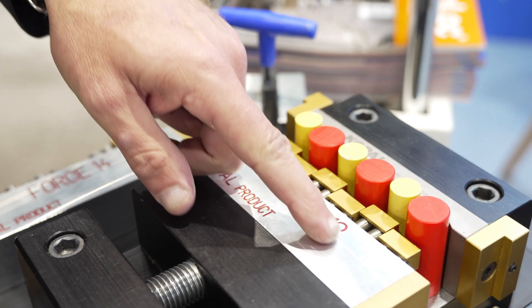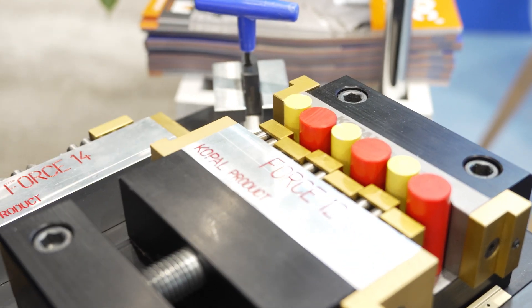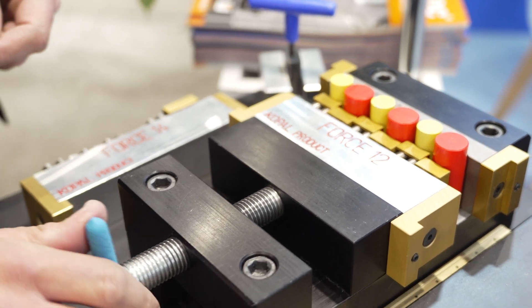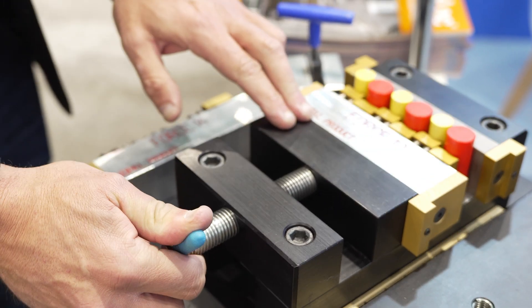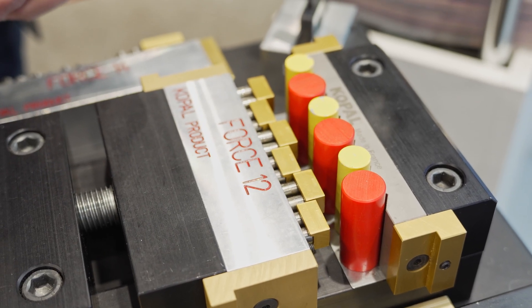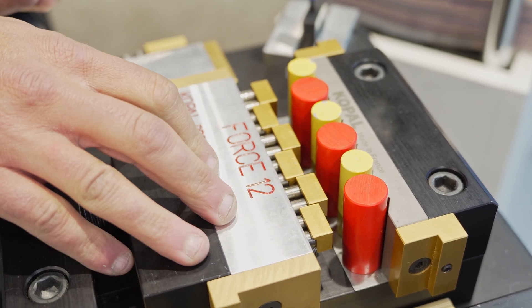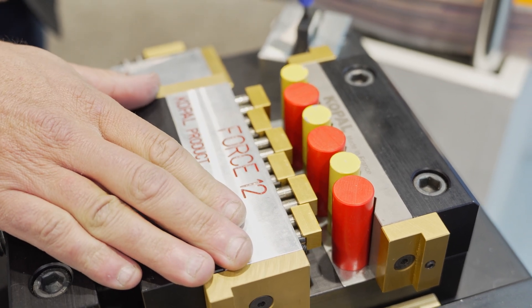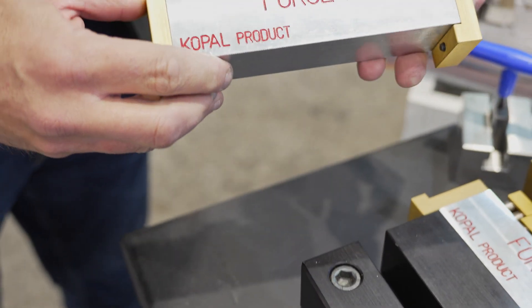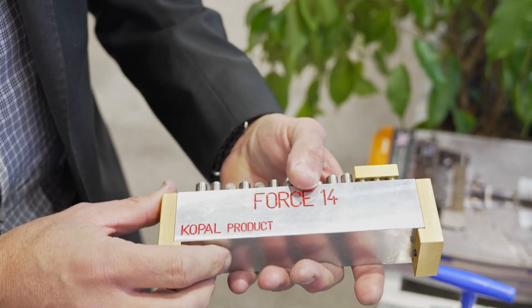And here we've got the Force range of vise jaws. So you have the Force 12. This will fit on any six-inch vise. And as you can see, the pistons arrange to clamp your parts. You can clamp different sized parts with the same jaw. And then we've got the Force 14, and this will bolt to any eight-inch vise.